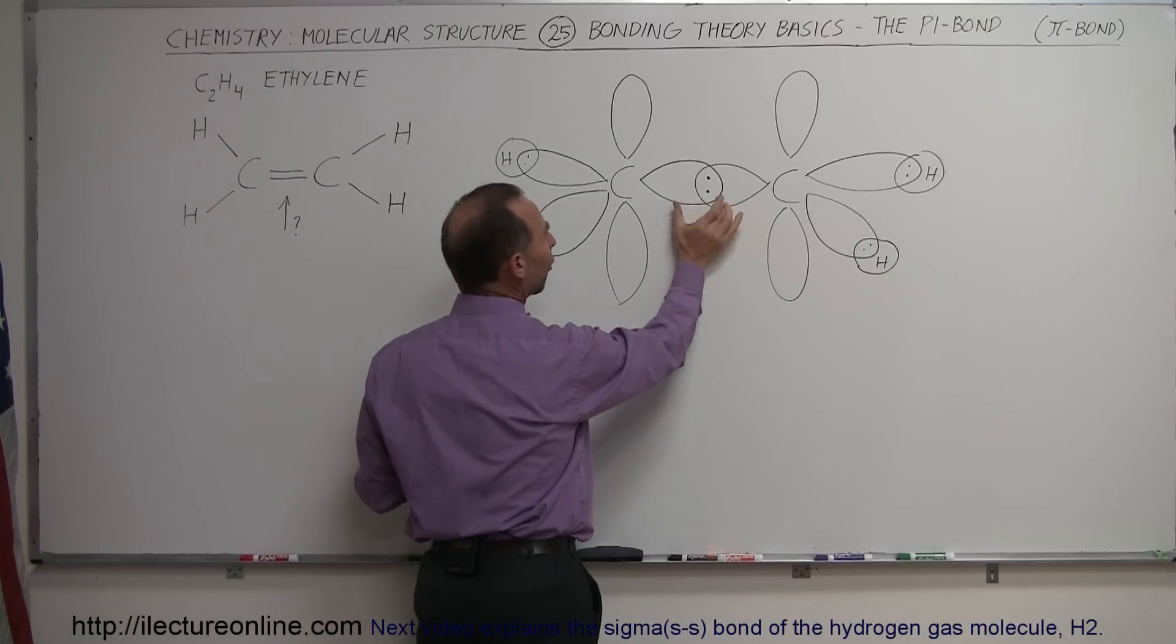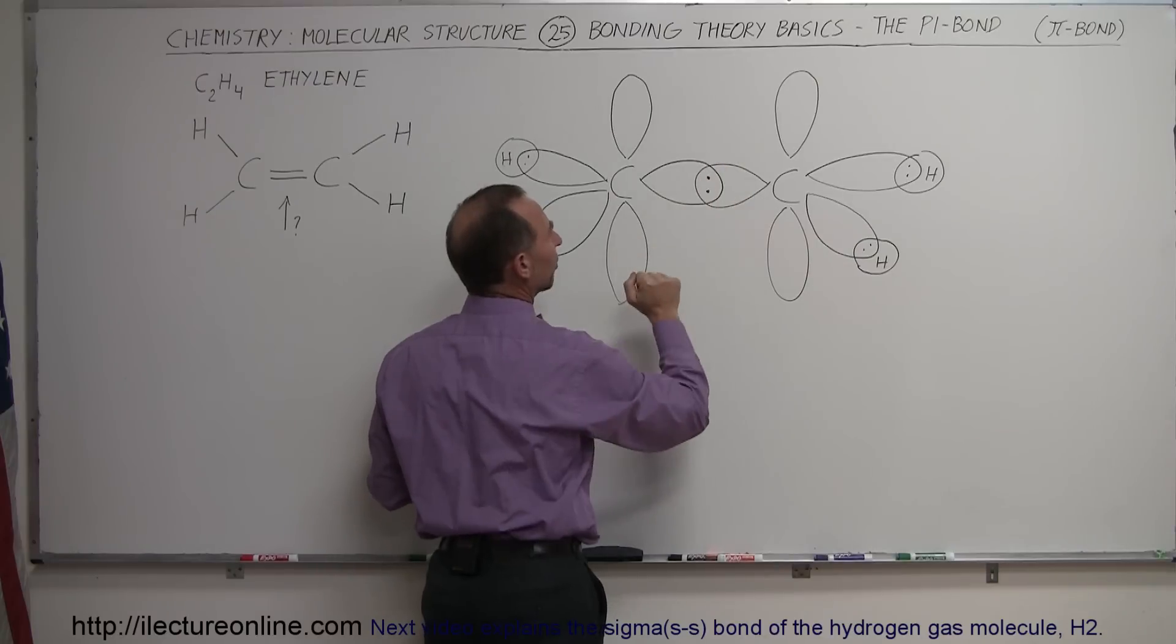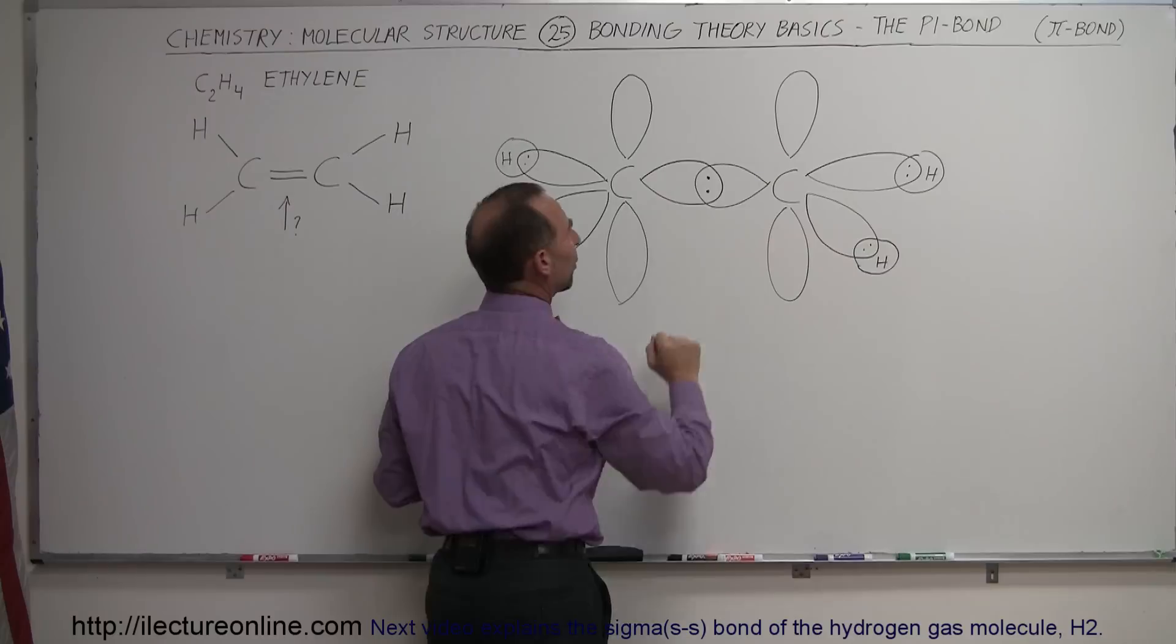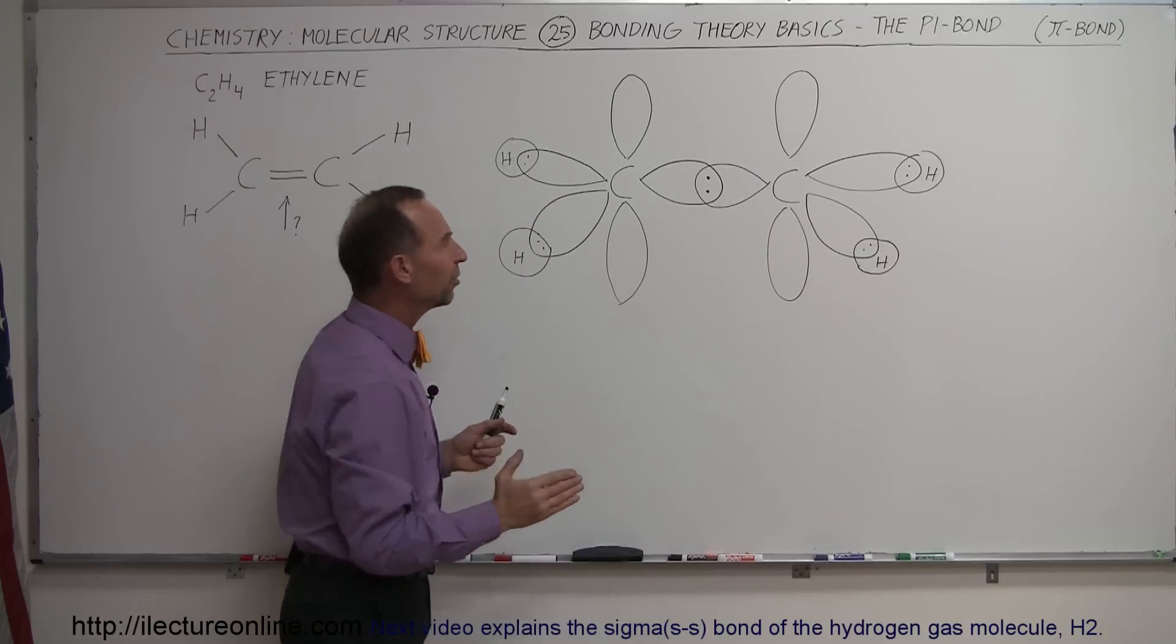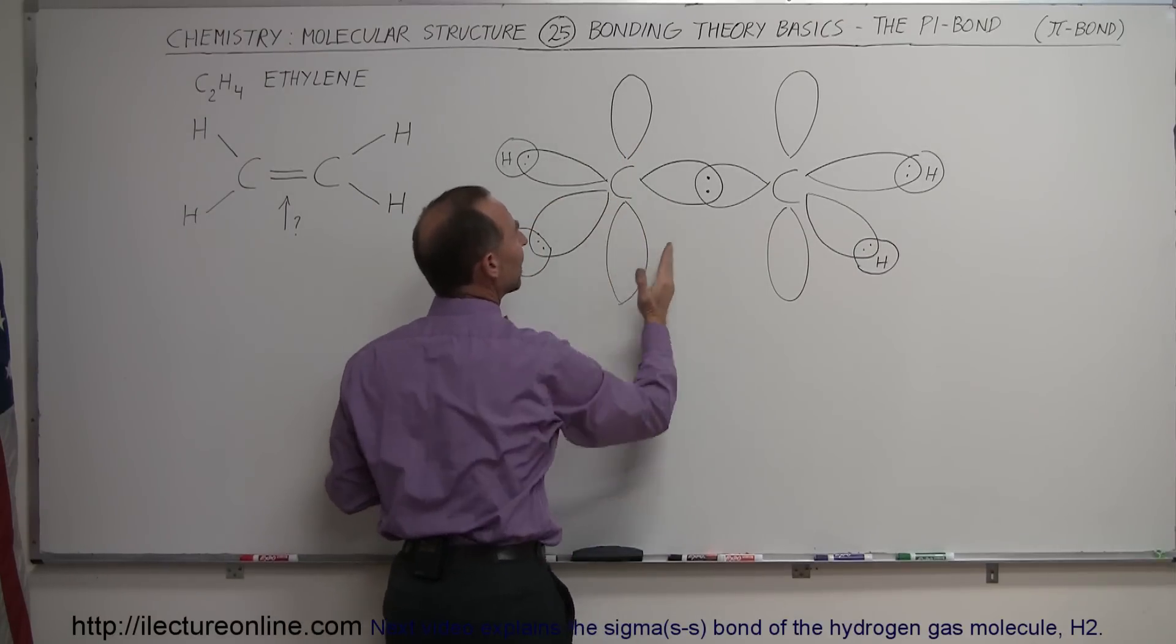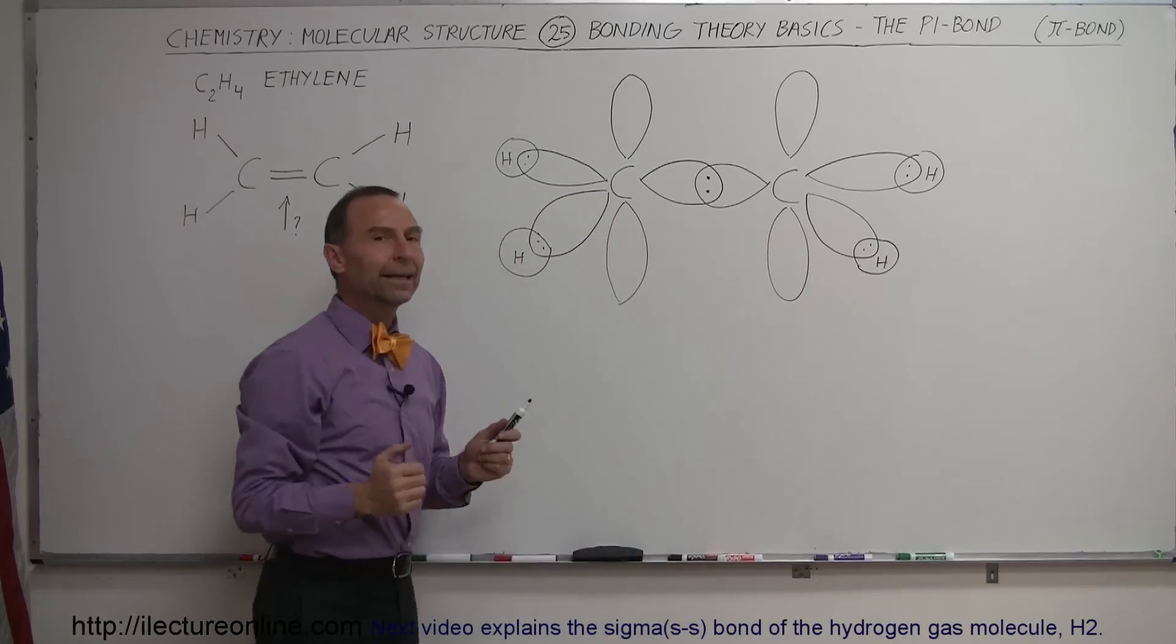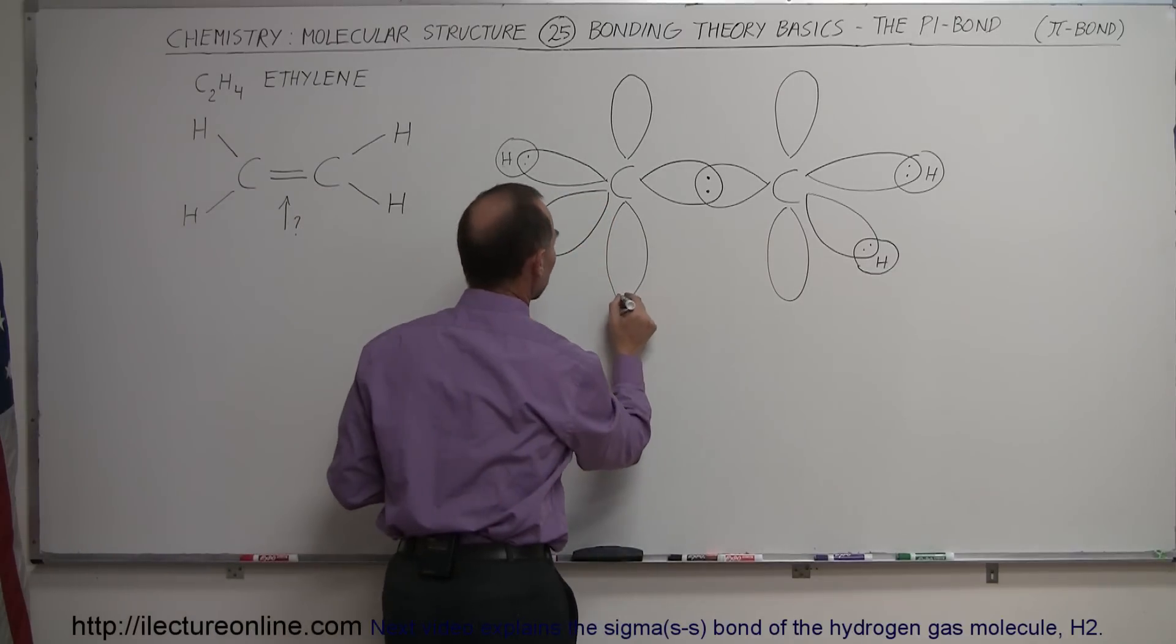But think of it as two p orbitals overlapping, sharing the two electrons like that, and forming what we would call a sigma bond. But then we still have these two other p orbitals, which are oriented in a different direction.